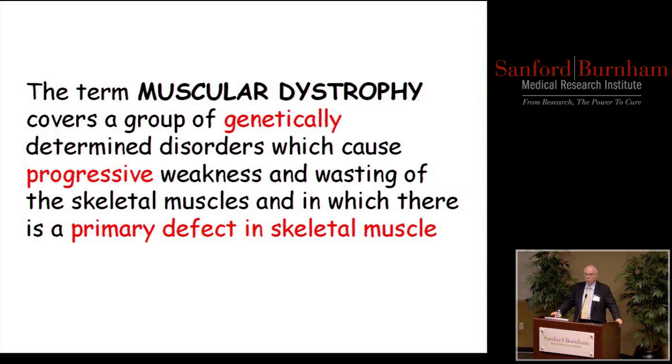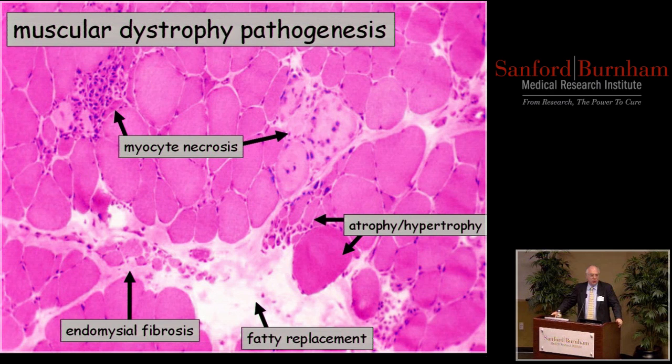An example of a biopsy from a patient with Duchenne muscular dystrophy is illustrated here. Instead of having pure muscle cells, you end up having muscle cell death and muscle cell necrosis. Eventually you start to lose muscle cells and you end up having fat infiltration and fibrosis. This is when patients begin to become weak because they're losing functional muscle.